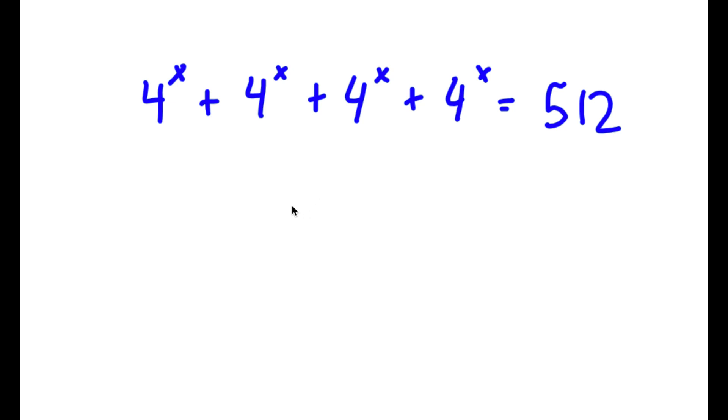In this problem, I have 4 to the power of x plus 4 to the power of x plus 4 to the power of x plus 4 to the power of x is equal to 512.